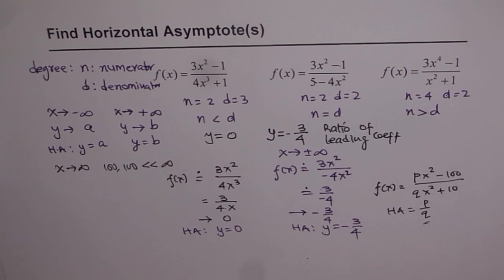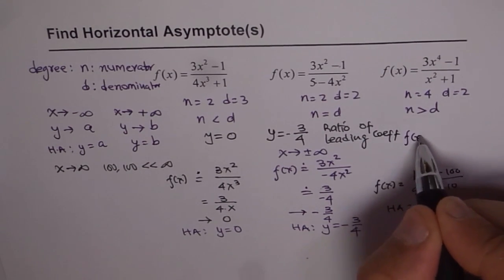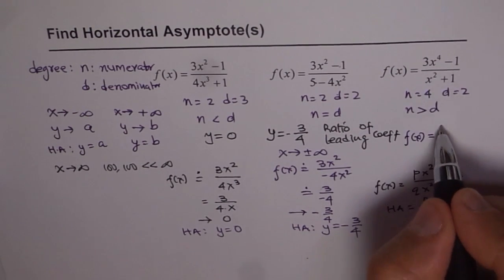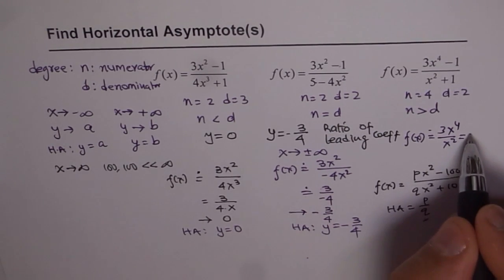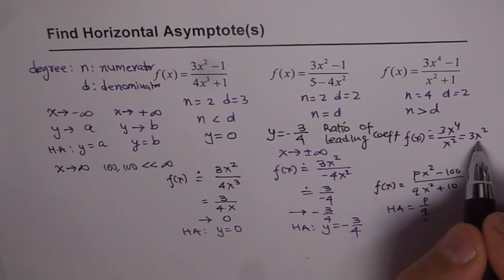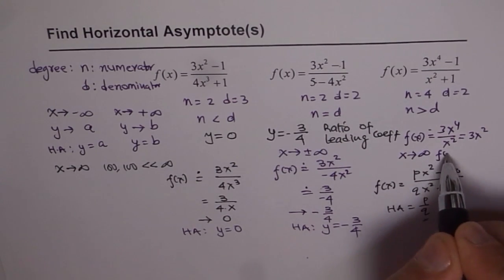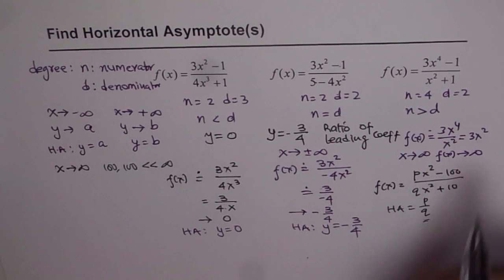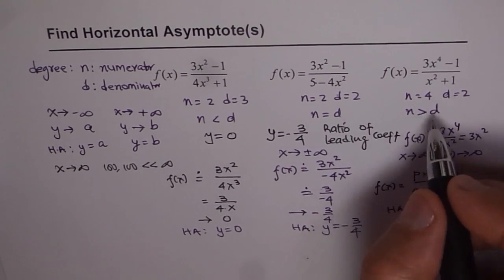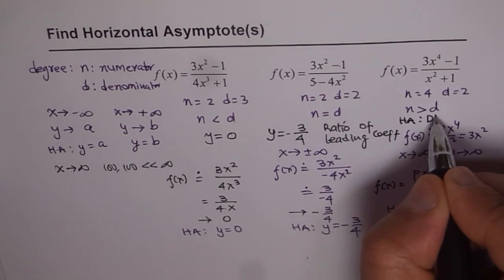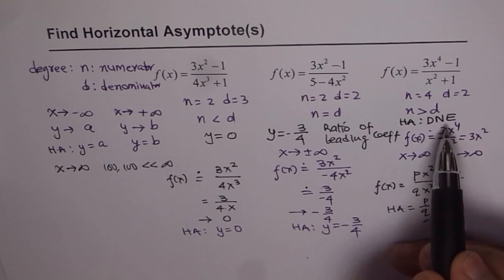For the last case, where the degree of the numerator is higher: here f(x) approaches approximately 3x to the power of 4 over x squared, which simplifies to 3x squared. If x is large, this is also large. So if x approaches infinity, then f(x) also approaches infinity — we are not approaching a defined value. In this case, the horizontal asymptote does not exist.